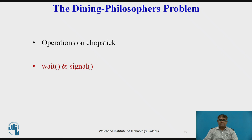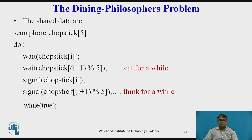A philosopher tries to grab a chopstick by executing a wait operation on the semaphore, and she releases her chopstick by executing the signal operation on the appropriate semaphore. The solution guarantees that no two neighbours are eating simultaneously. However, if all elements of the chopsticks array become equal to zero and each philosopher tries to grab her right chopstick, she will be delayed forever — illustrating a deadlock scenario.